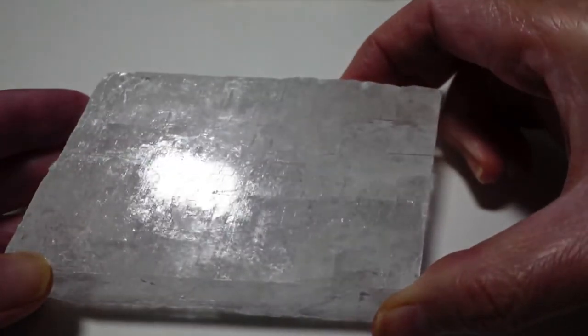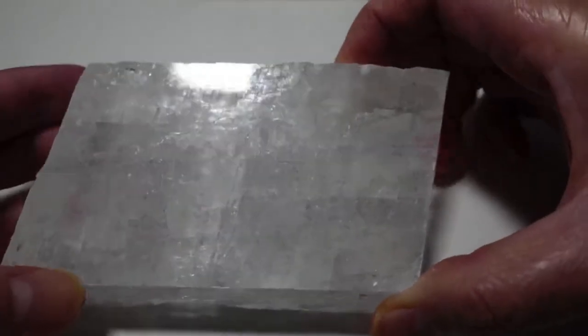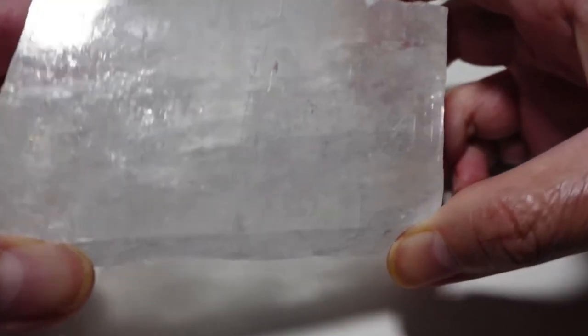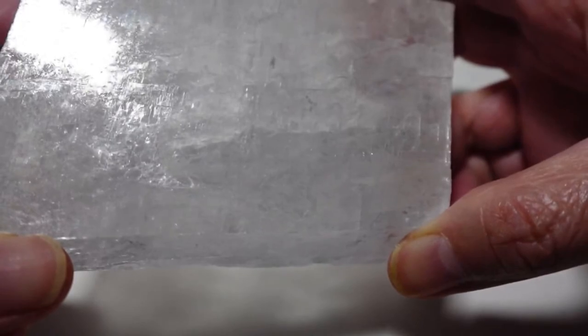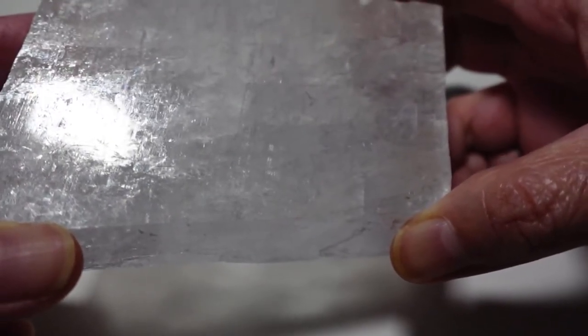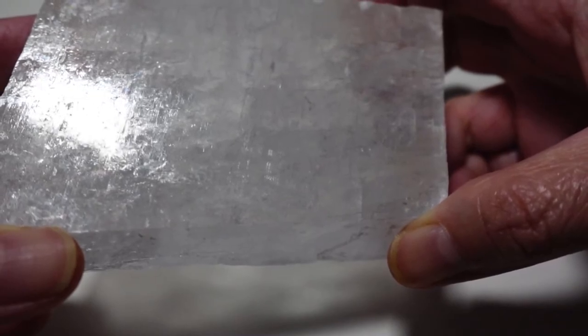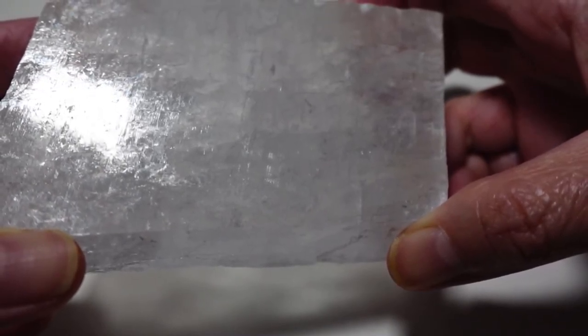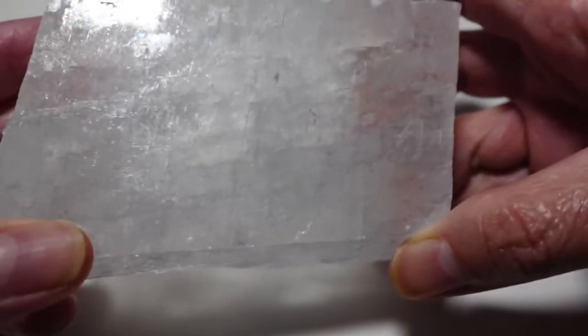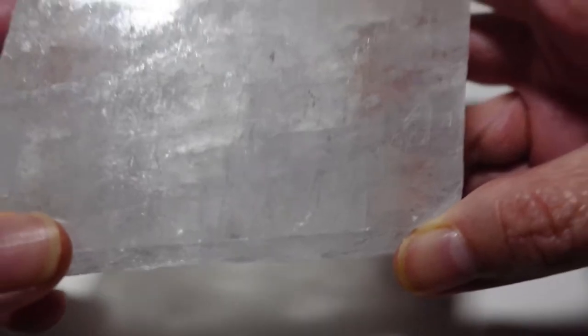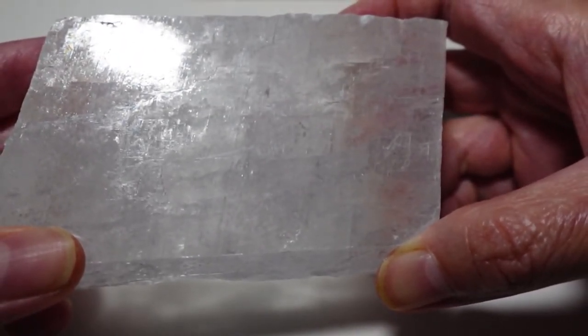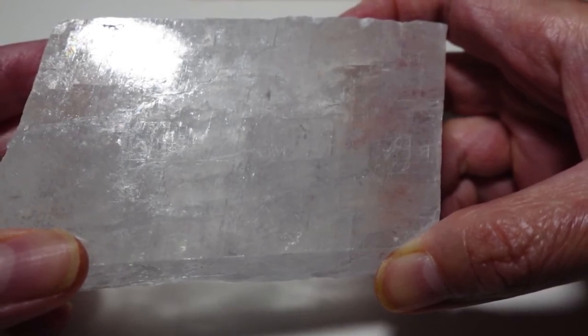Iceland Spar aligns with all seven chakras. So the following seven chakras are root, sacral, solar plexus, heart, throat, third eye, and crown chakras. This particular crystal is a crystal of clarity, joy, inner vision, inner peace, communication, and transformation.